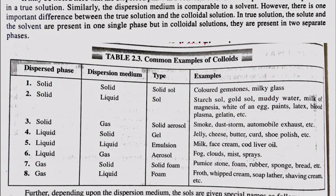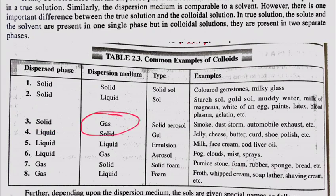Next is solid aerosol. A solid aerosol is the type in which the dispersed phase is solid and the dispersal medium is gas. Examples include smoke, dust storms, and automobile exhaust.